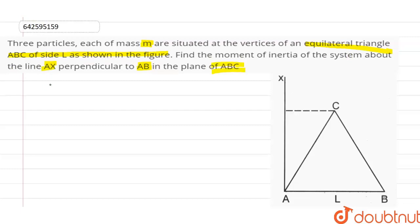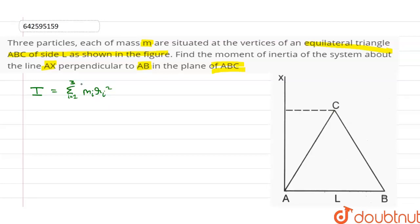The formula for moment of inertia, which is represented as I, is equal to summation of product of mass and square of perpendicular distance from the axis, which in this case the axis is line AX. I will be equal to summation from 1 to 3 in this case because we have three masses.